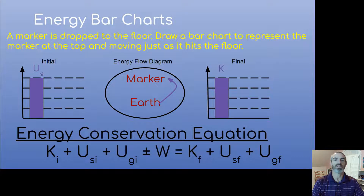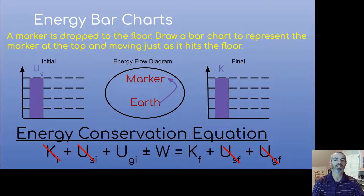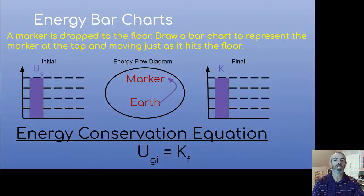Since the arrows stay inside the system, the initial height has to equal the final height — a total height of four in both situations. Then we write our conservation of energy equation and cancel out the mechanical energies we did not use: no kinetic or spring energy in the initial, no spring or gravitational in the final. All arrows stayed inside the system, so work is zero. That simplifies our equation down to initial gravitational energy equals final kinetic energy.